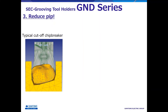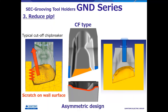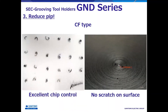Although lead angle is an effective countermeasure against PIP formation, with a simple cutting edge shape, chips are evacuated at an angle, resulting in scratches on the machined surface. With the CF type, the rake angle, land width, and front cutting edge shape are designed to be asymmetric so that chips are evacuated straightly. As you can see in this example, straightly curved chips do not scratch the machined surface. This characteristic asymmetric chip breaker design of GND prevents formation of PIP and scratches on the machined surface.